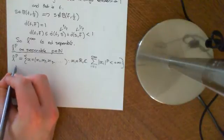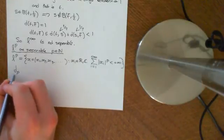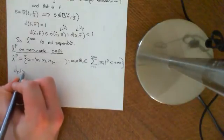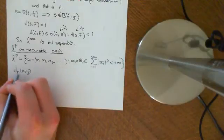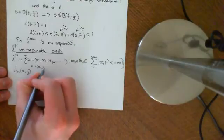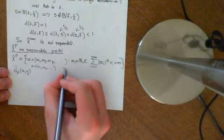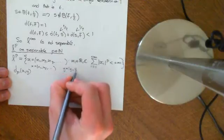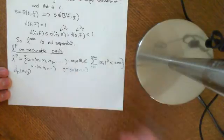And then we defined the distance, which is often written DP, between X and Y, where X and Y are both sequences. So I'll just write that. X is a sequence, X1, X2, etc. And Y is also a sequence, so Y1, Y2, those are the terms of the sequence going on.